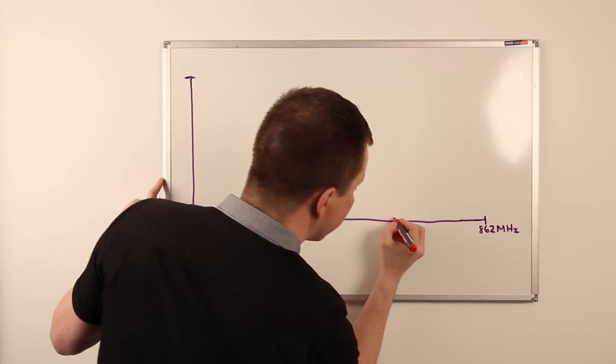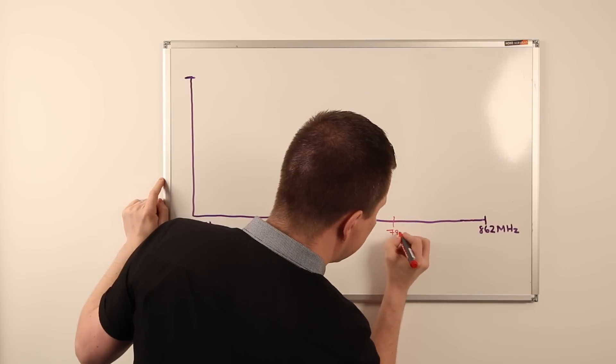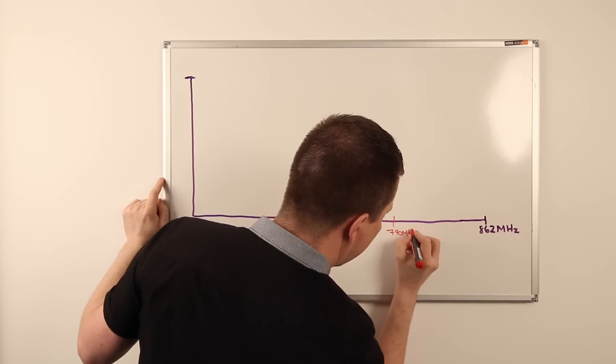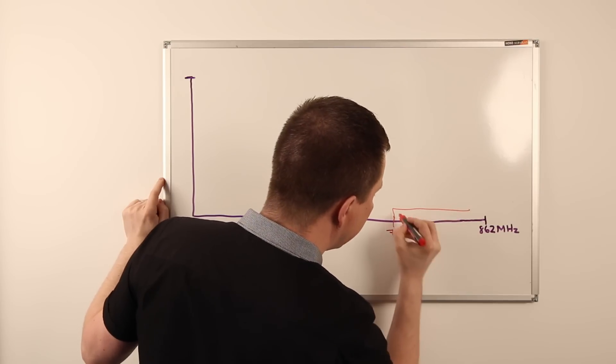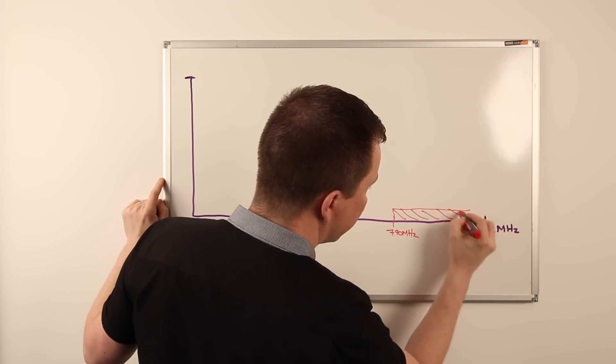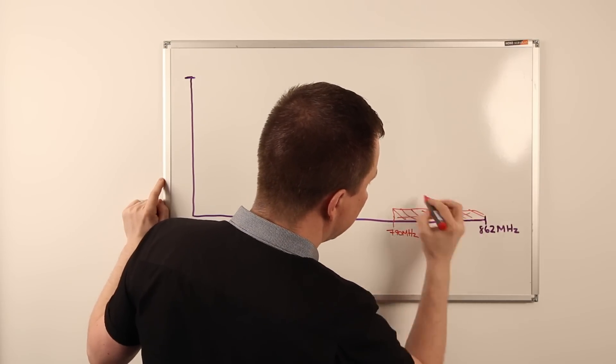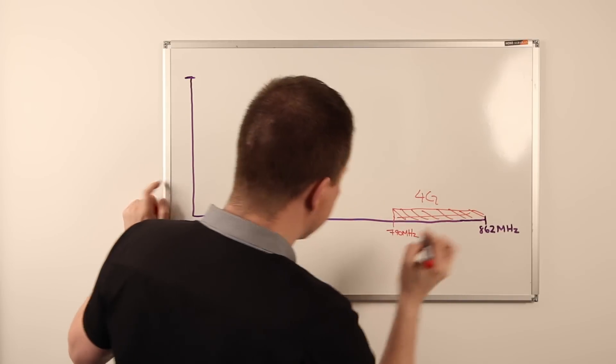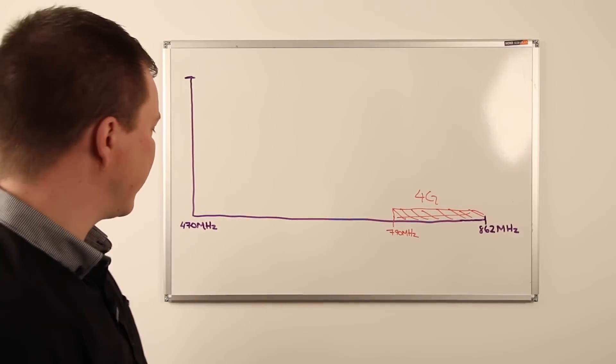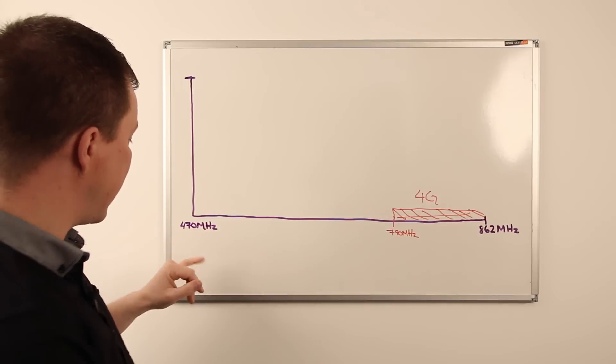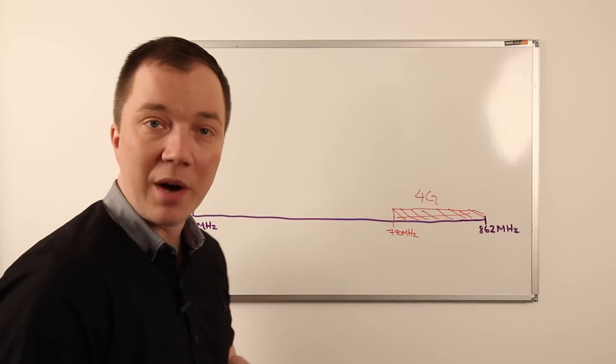The back end of 2012 saw 790 megahertz and up auctioned away to next generation 4G services, and by default this took away a fair amount of spectrum and left users of radio microphones with less spectrum to operate in.